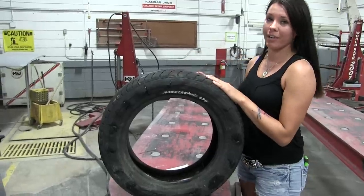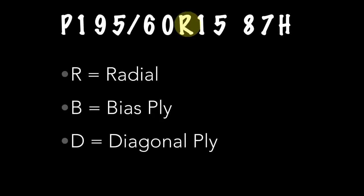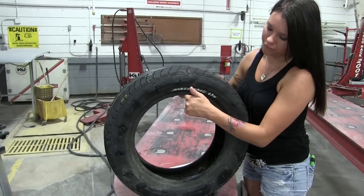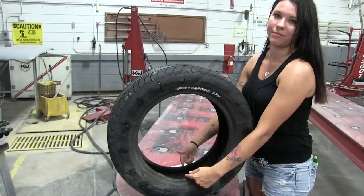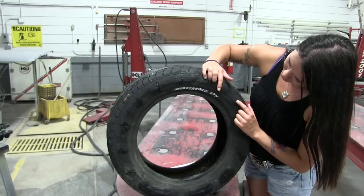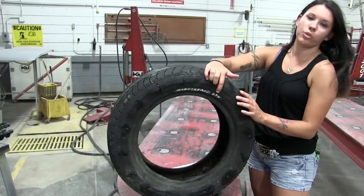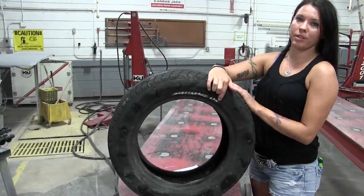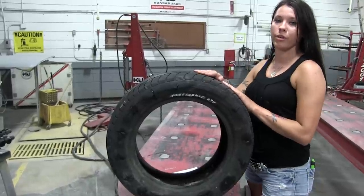The R means it is a radial. Your 15 here is your diameter from inside to inside — the size of your rim. 87 here is your weight capacity. And the H here is the maximum speed rating. With being an H, it's going to be 130.